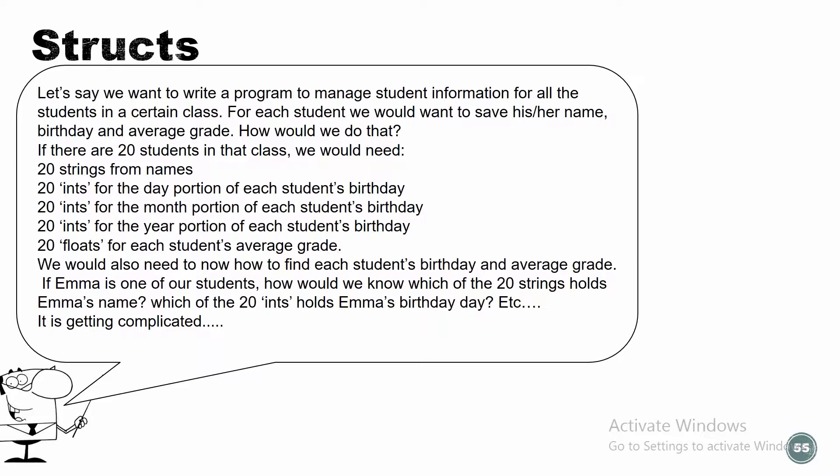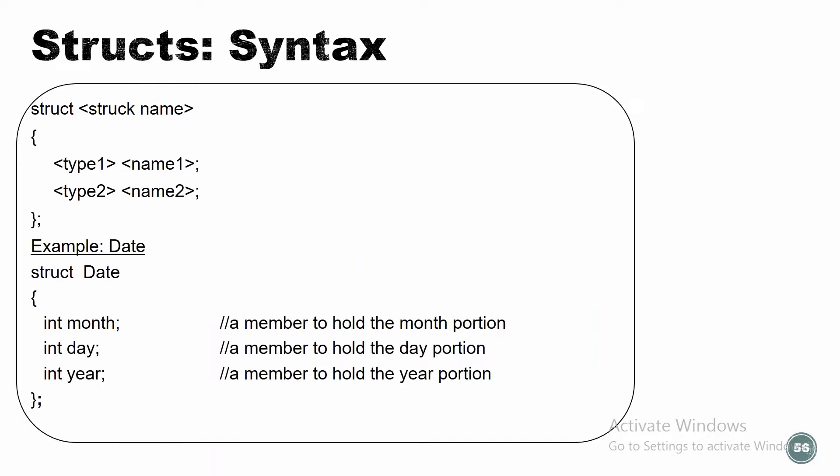What structs give us is a way to define our own data type. I'm going to make a struct and say it's going to hold a birthday. Whenever I define a variable from this data type, it's going to have three elements inside — three members: a month, a day, and a year. In that way, I can combine different basic data types together into a data type that I decide.